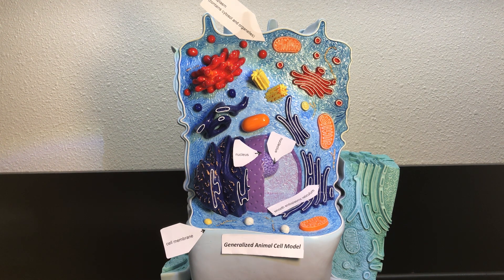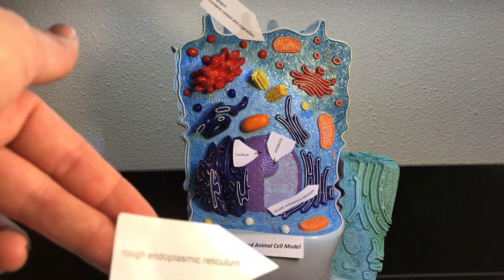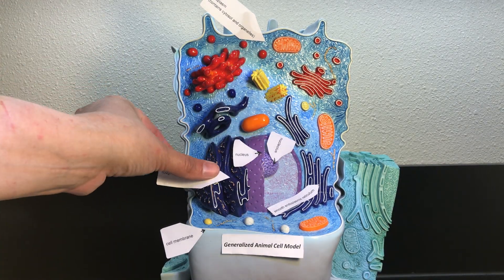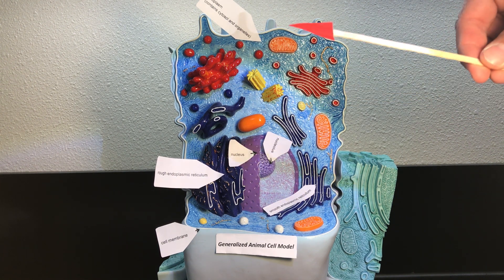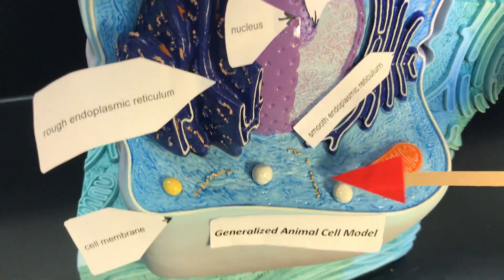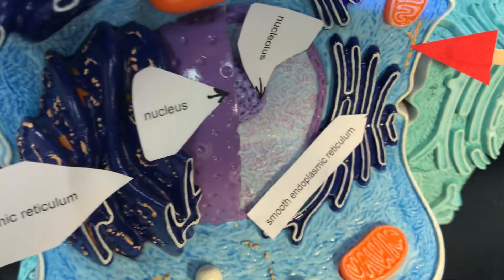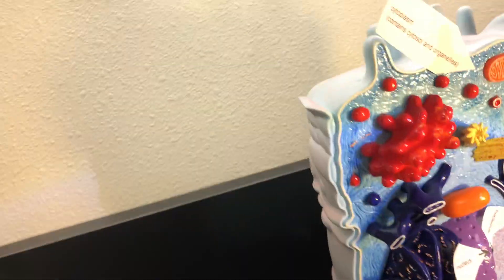The rough endoplasmic reticulum synthesizes proteins. Over here on this side, we have the rough endoplasmic reticulum. What makes it rough? Well, on the surface there are ribosomes — the rough ER is rough because of those ribosomes. There are also free-floating ribosomes throughout the cytoplasm. Here's an example of a free-floating ribosome, and there are some more up here. Here's the rough endoplasmic reticulum surface — you can see the ribosomes dotted on the surface.